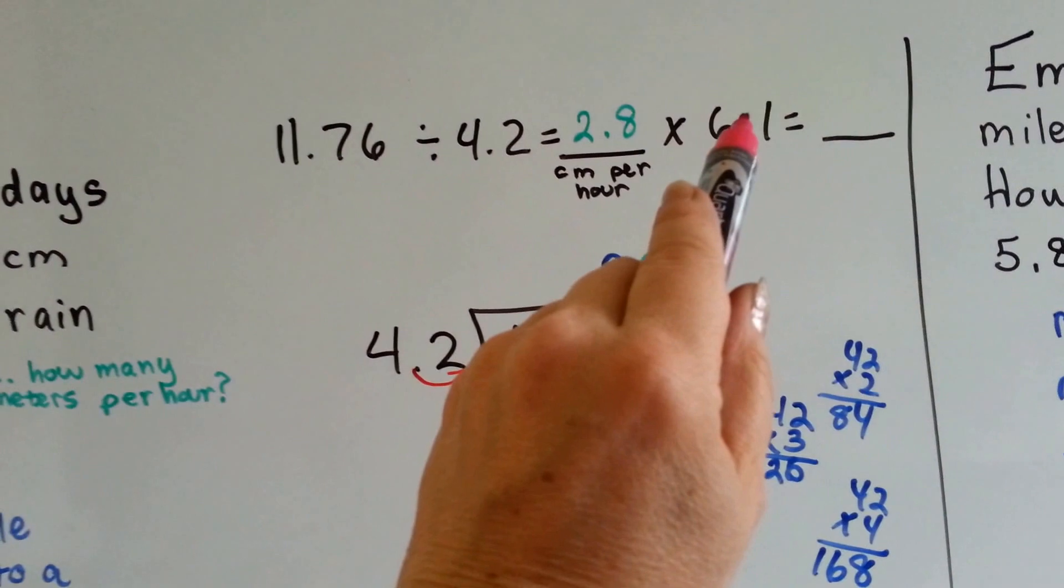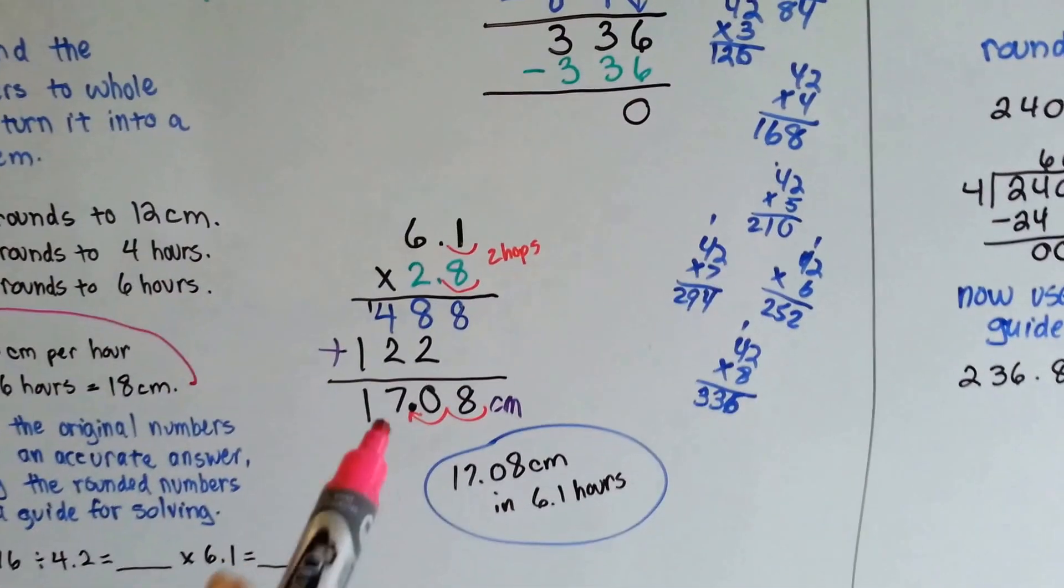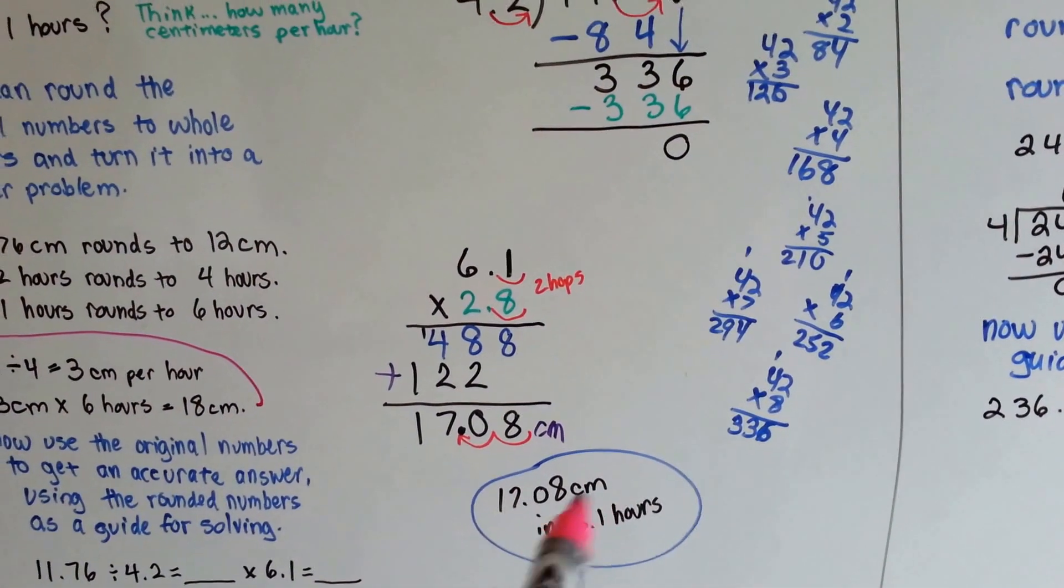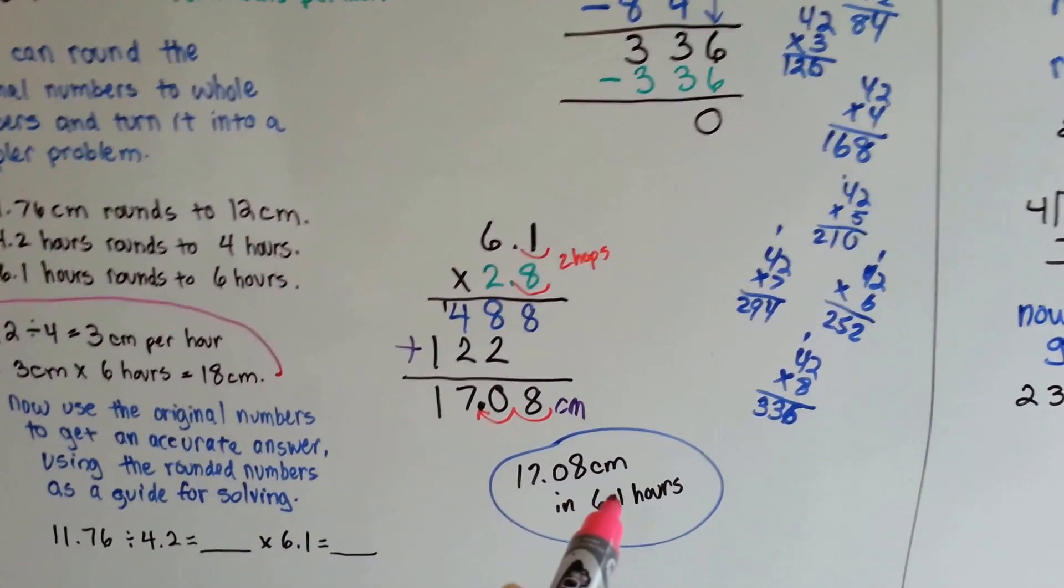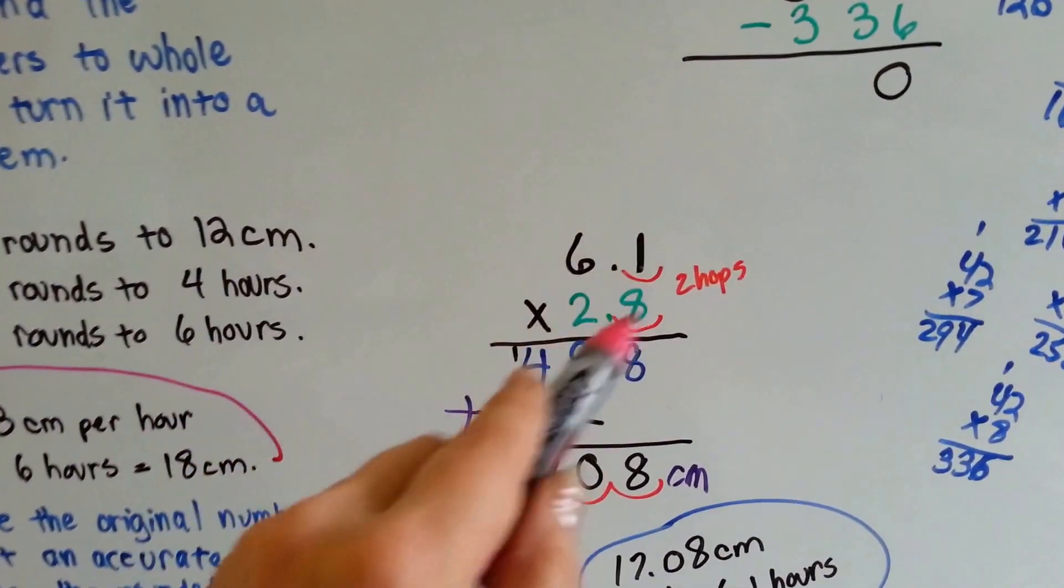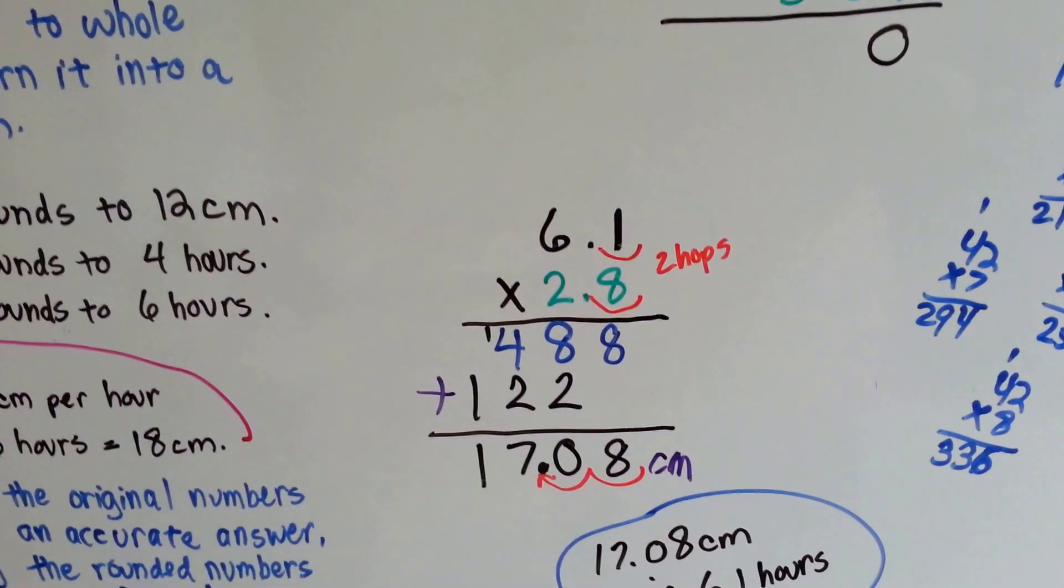Now, we can just multiply it by the 6.1 and be done. Don't worry about breaking the clock down and what 6.1 hours means in minutes. That's not important. Just use it as a number. We're going to multiply this as a regular number and then count hops for the end.